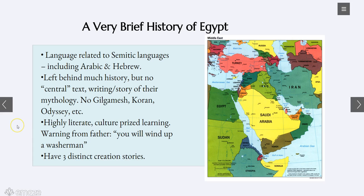The Egyptians overall — and again I'm talking about 5,000 years — were highly literate. The culture prized learning. As one warning found from a father to his son goes: if you do not get an education, you will wind up a washerman. That's pretty similar to parents today — if you don't go and get your education, where are you going to work? So it's always that admonishment.